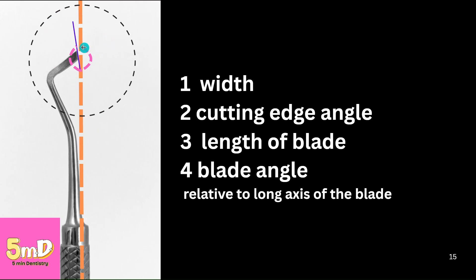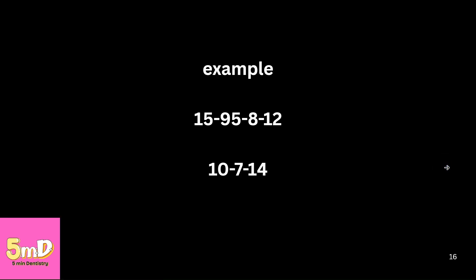Therefore, according to this circle, if the angle is less than 50 degrees, it is the blade angle. If it is more than 50 degrees, it is the cutting edge angle. It is a common norm that the blade angle will be less than 50 degrees and the cutting edge angle will be more than 50 degrees. With that differentiation, you can always remember the difference between the two.